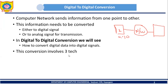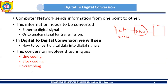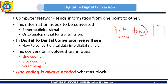This conversion involves three techniques. In order to convert digital data into a digital signal, we require three techniques: first is line coding, second is block coding, and third is scrambling. Out of these three, line coding is compulsory — it is always required. Block coding and scrambling are optional; they may or may not be needed.